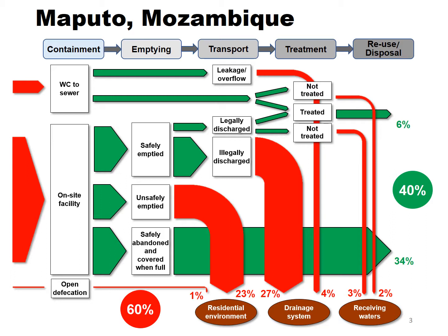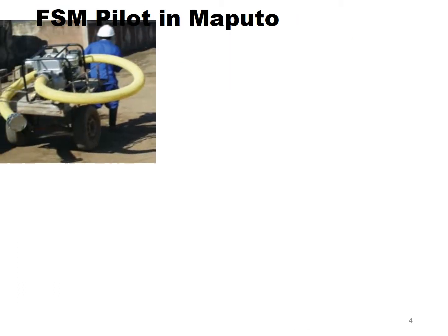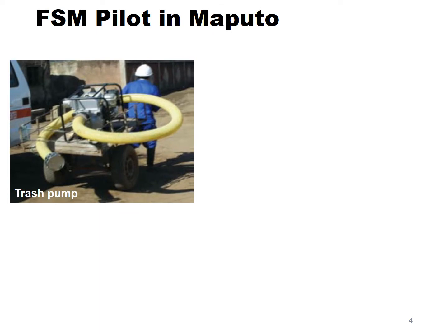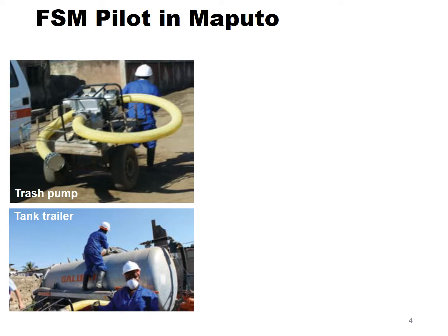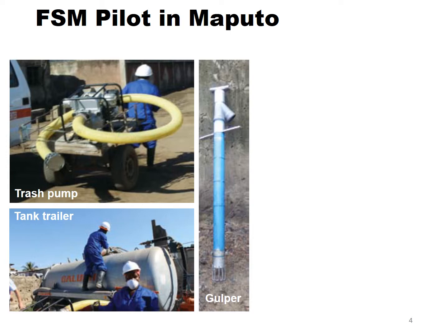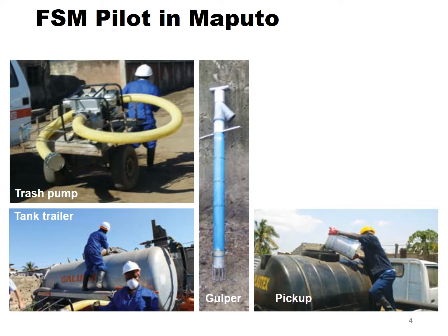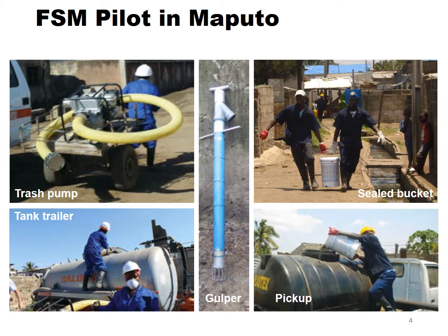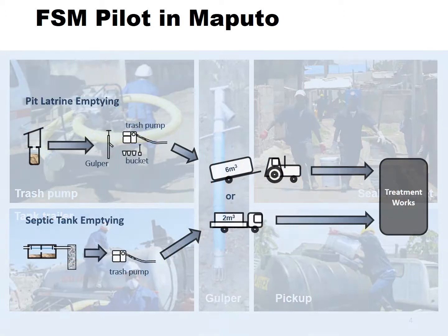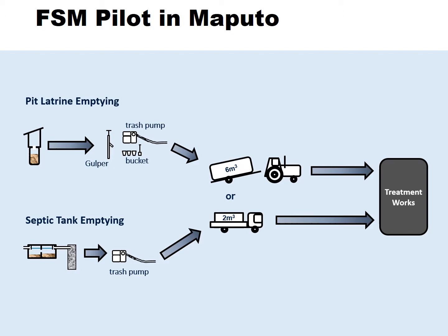The SFD was first developed by the Water and Sanitation Programme in Mozambique, and the first one was drawn for the capital city, Maputo. This was an important ingredient in the dialogue between the World Bank Water and Sanitation Programme and the Maputo Municipal Council. This led eventually to the design and implementation of a district-scale pilot of faecal sludge management in some of the densest peri-urban neighbourhoods of the city, in collaboration with the NGO Water and Sanitation for the Urban Poor. This in turn led to the redrafting of Maputo's sanitation bylaws to cover faecal sludge management explicitly for the first time, and to the scaling up of the pilot programme into other peri-urban neighbourhoods. At the same time, the Water and Sanitation Programme worked with the Municipal Sanitation Department to build capacity and develop a revitalisation plan.